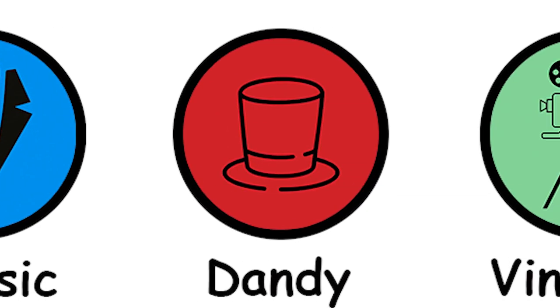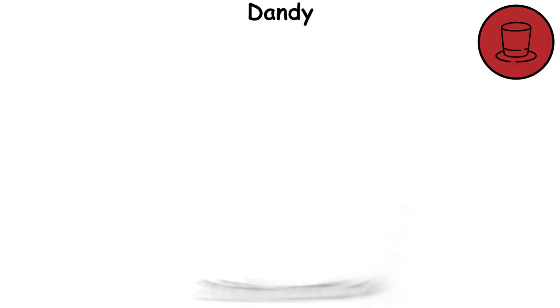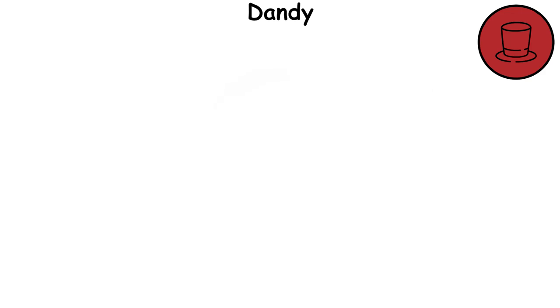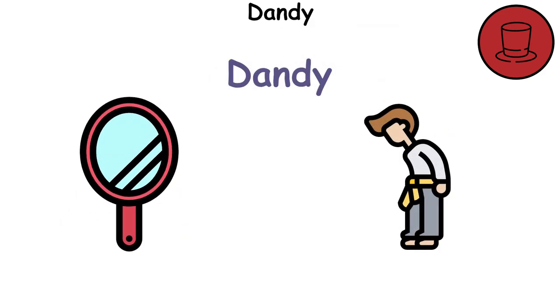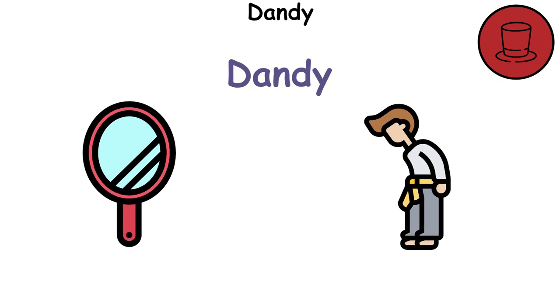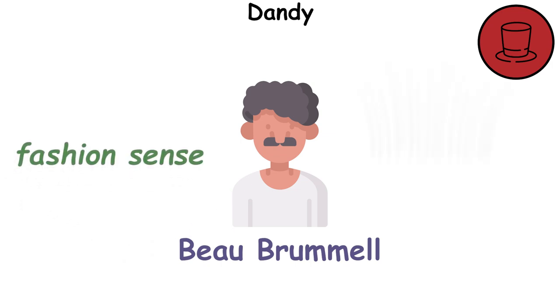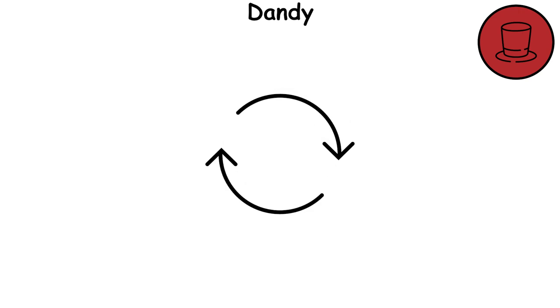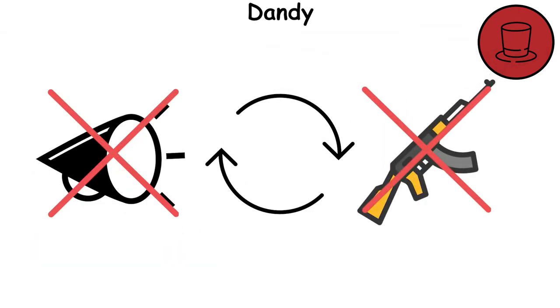The dandy style has a rich history, dating back to the 19th century, and is often associated with elegance and sophistication. The term dandy was first used to describe men who placed great importance on their physical appearance and manners. The style was popularized by Beau Brummel, a Londoner who was known for his impeccable fashion sense and influence on men's style. He sparked a revolution not with rhetoric or military might, but with innovations in masculine sartorial style and manner.